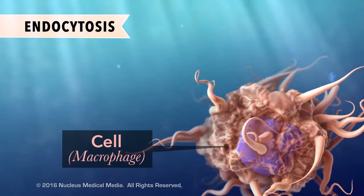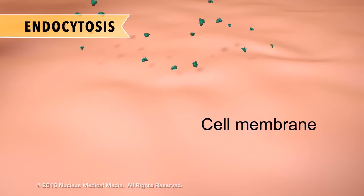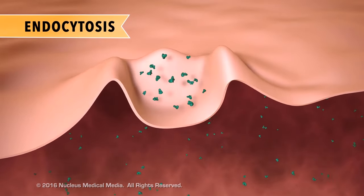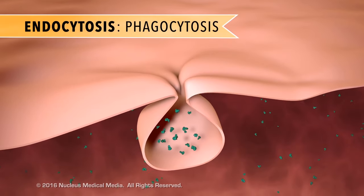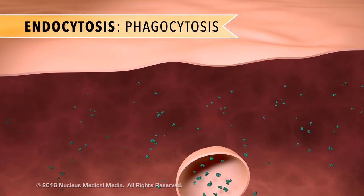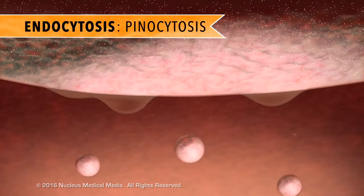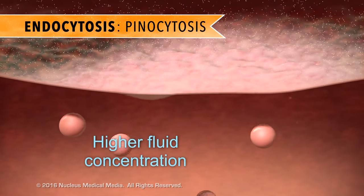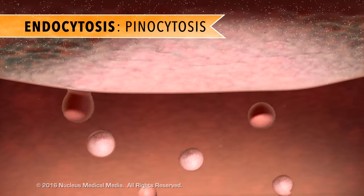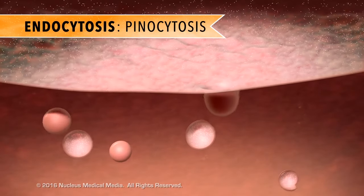Sometimes a cell uses active transport to pull in large particles using its cell membrane. This is called endocytosis. One type of endocytosis is called phagocytosis, which often happens when the cell takes in some type of nutrient. In another type of endocytosis called pinocytosis, the cell takes in fluids by creating pockets in the cell membrane, ingesting large amounts of fluid by pinching off these pockets into the cytoplasm.